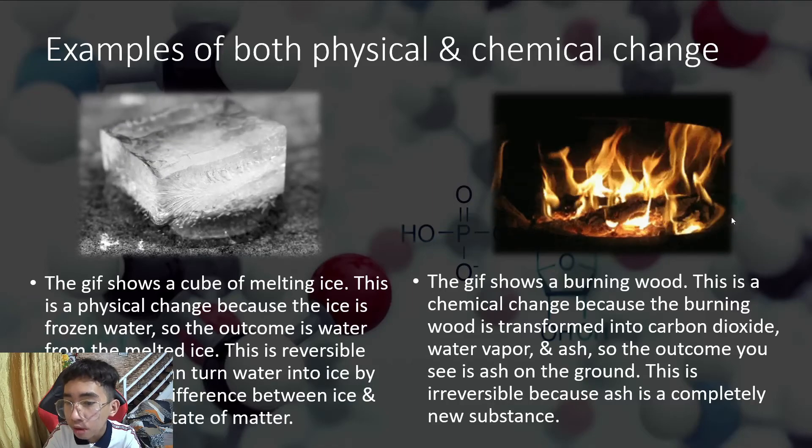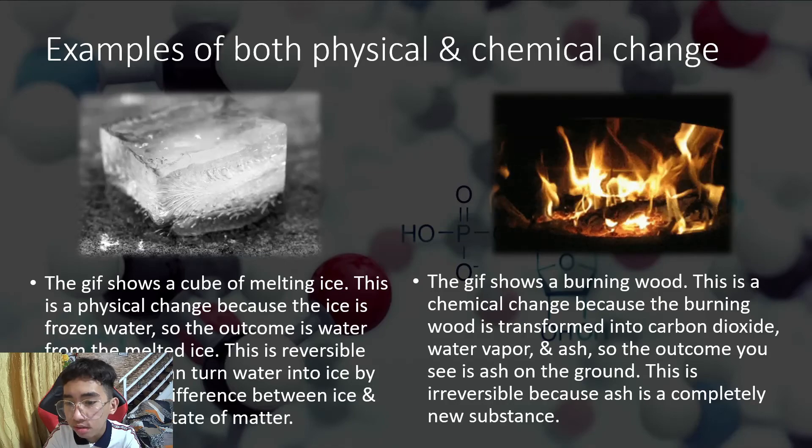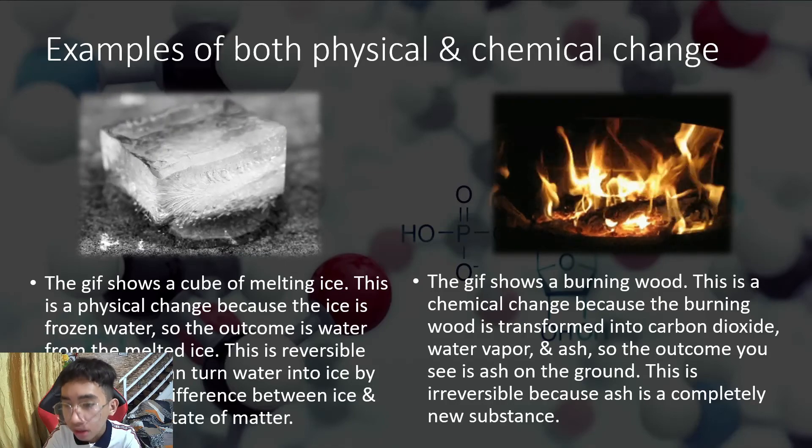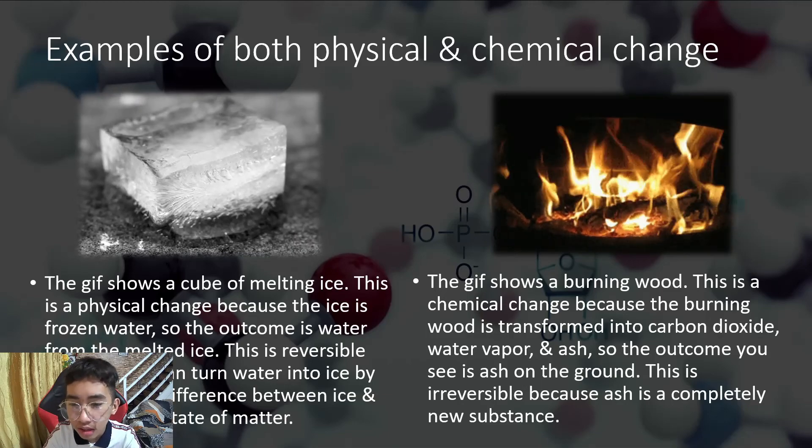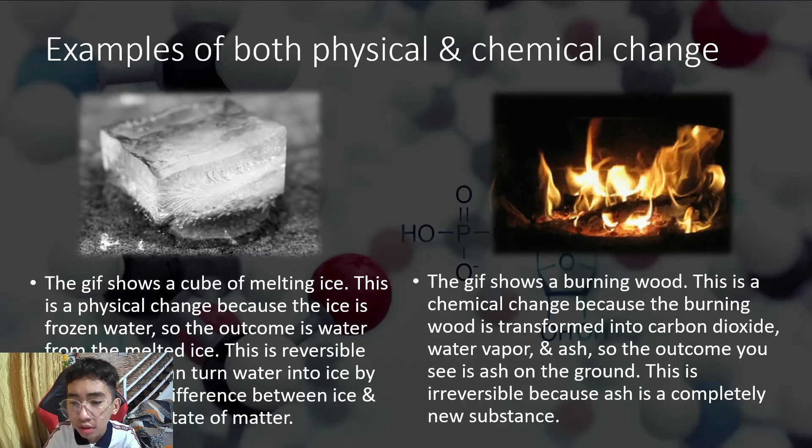The GIF shows a burning wood. This is a chemical change because the burning wood is transformed into carbon dioxide, water vapor, and ash. So the outcome you see is ash on the ground. This is irreversible because ash is a completely new substance.